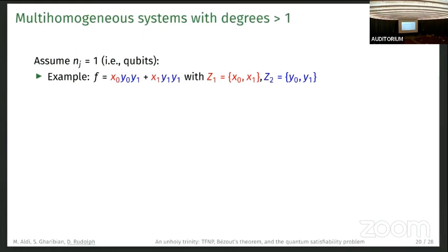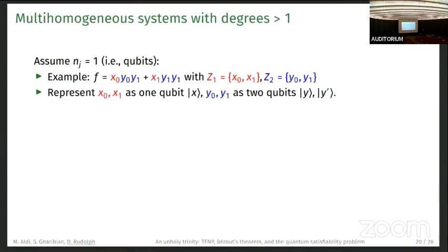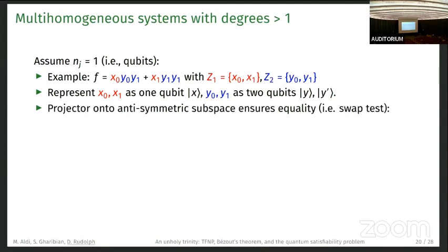Let's assume we have qubits. We have this constraint here with these two variable groups. We represent x_0, x_1 as a qubit x, and y_0, y_1 as two qubits y and y'. We need two qubits to get the higher degree. Now we need y and y' to be equal, so we do this with a projector onto the antisymmetric subspace to ensure equality, and this is effectively just a swap test.